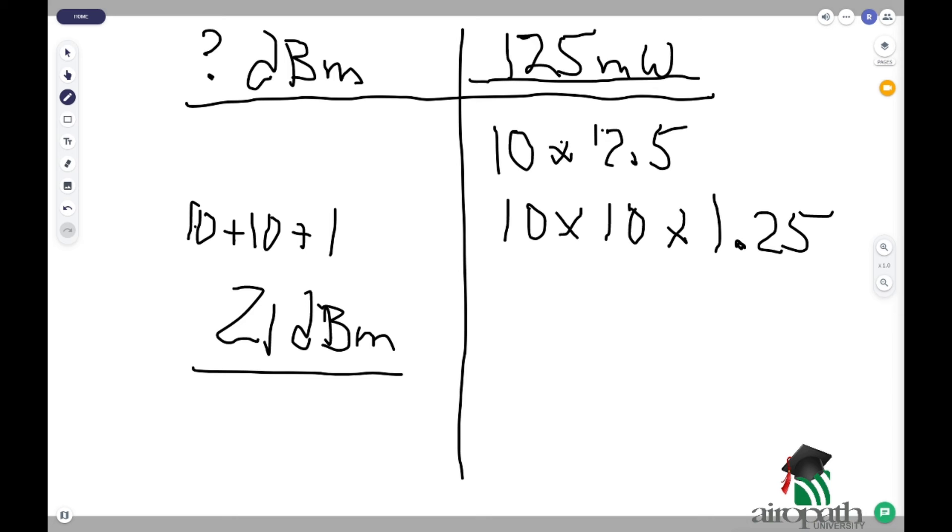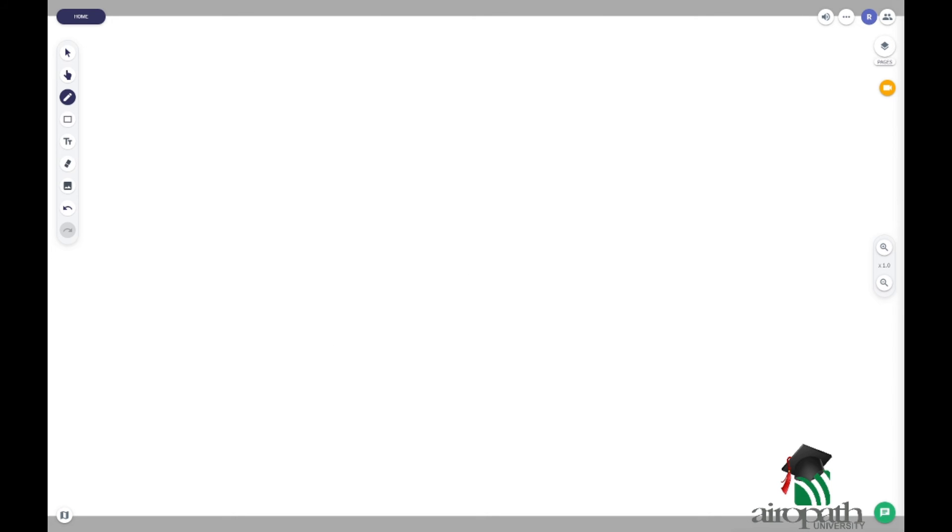Let's do one more. And this time let's go the other direction. So, in this case, we're going to separate our values again. But I want to know what 17 dBm is in milliwatts.